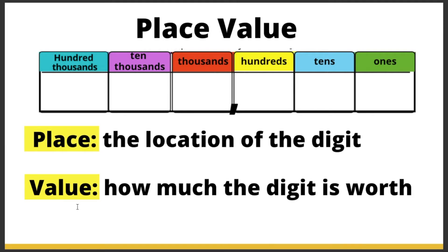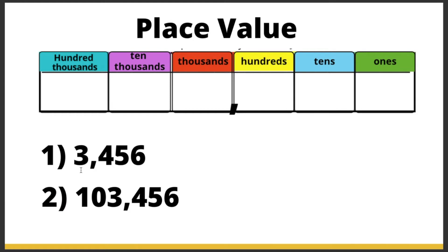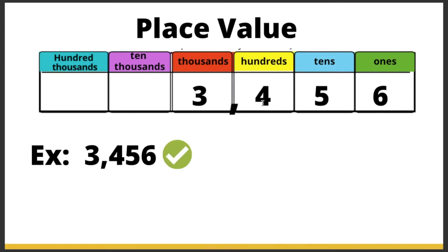Let's go ahead and look at some examples. The first number is 3,456. The 3 goes in the thousands place, 4 in the hundreds place, 5 in the tens place, and 6 in the ones place. An easier way is to look at the comma — the comma always belongs between the thousands and the hundreds place, so you can count how many numbers are before and after it.